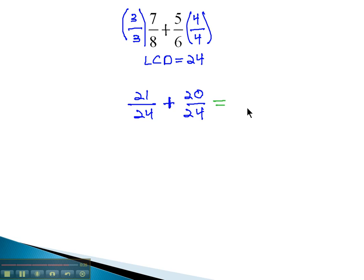We now have that common denominator we want, and we're ready to add the numerators. 21 plus 20 is 41 over the common denominator of 24. This fraction does not reduce, and so we have our final solution.